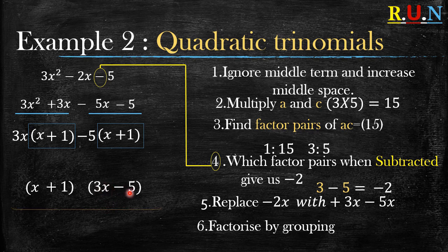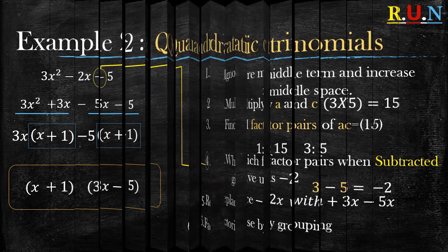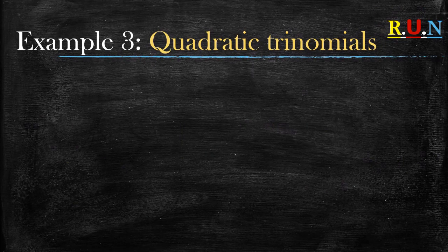So we write x plus 1 as one bracket in the answer, and 3x minus 5 as the second part of the answer. Just like that, we have found our answer for example two.